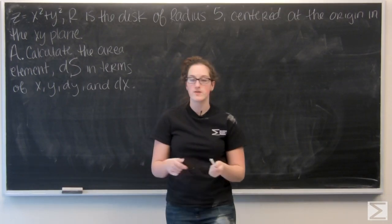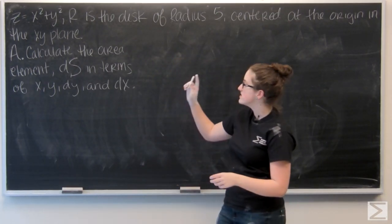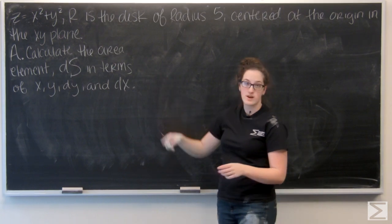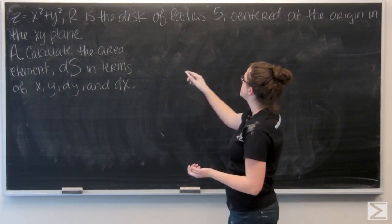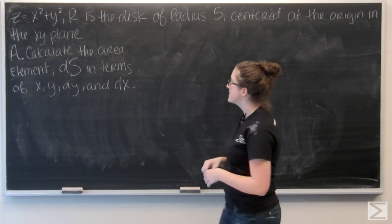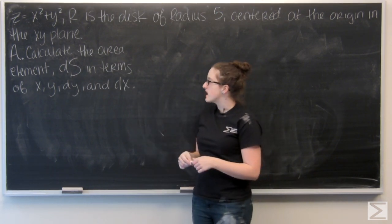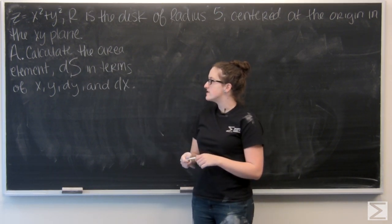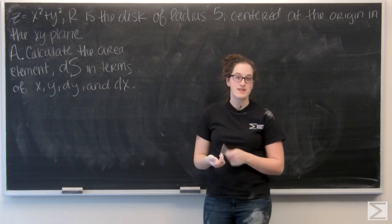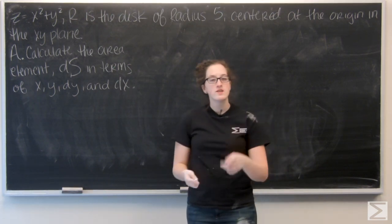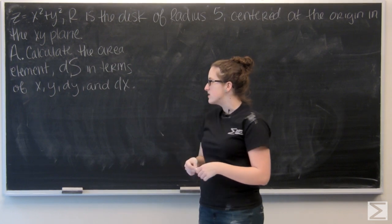Okay, for this problem we're working on surface area. We are given z equals x squared plus y squared in a region r, which is a disk of radius 5 centered at the origin in the xy plane. So part a asked us to calculate the area element ds in terms of x, y, dy, and dx.